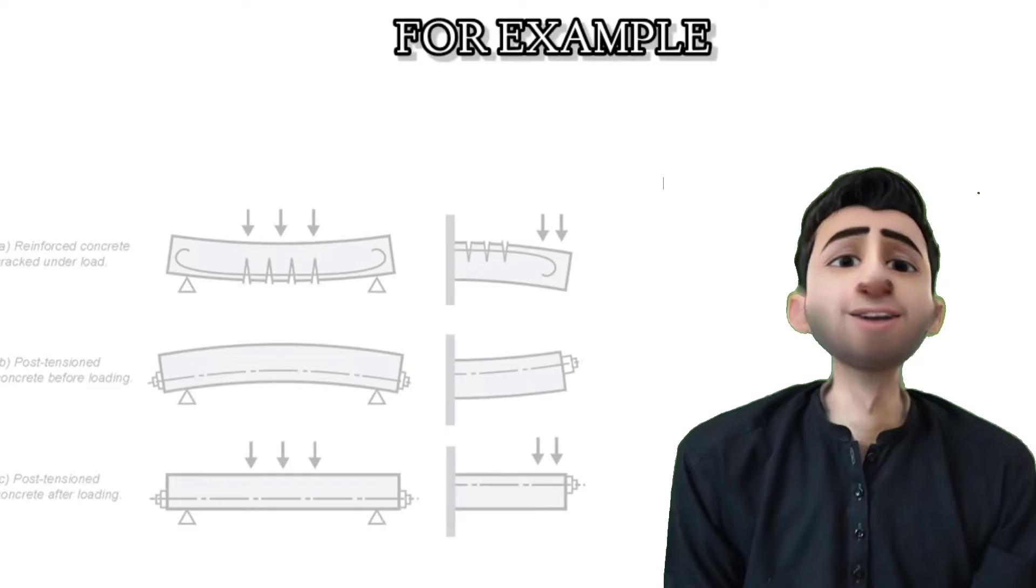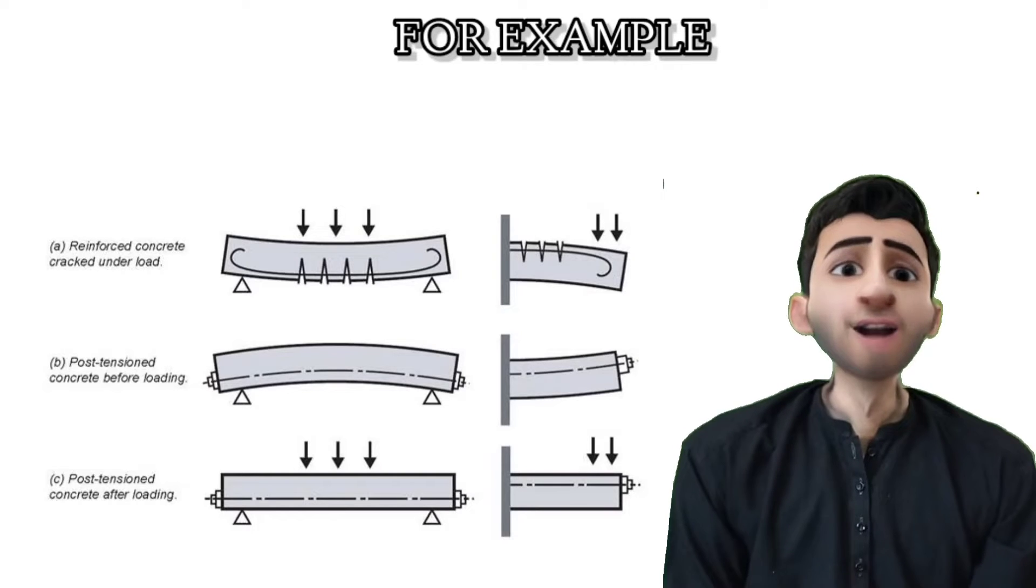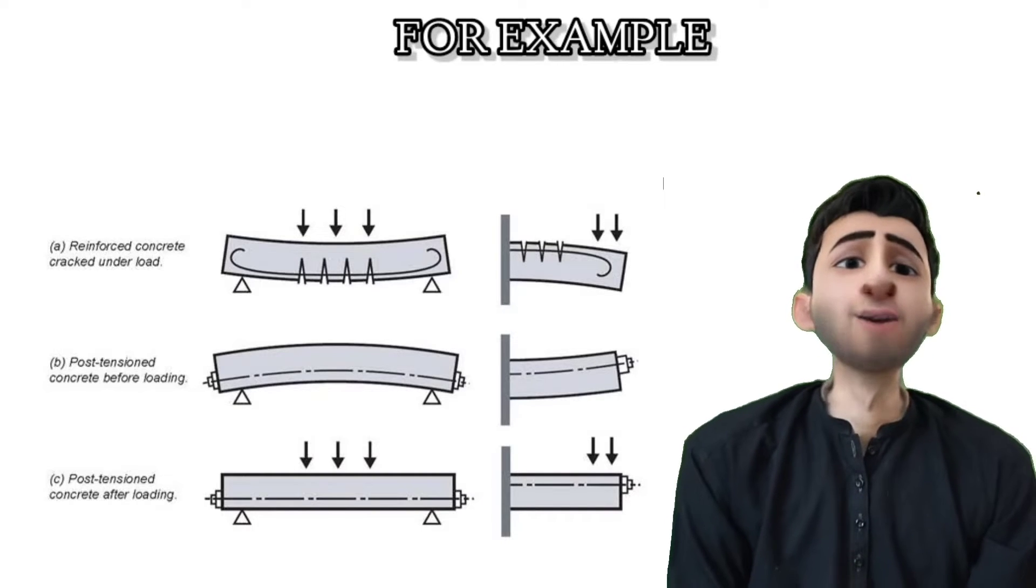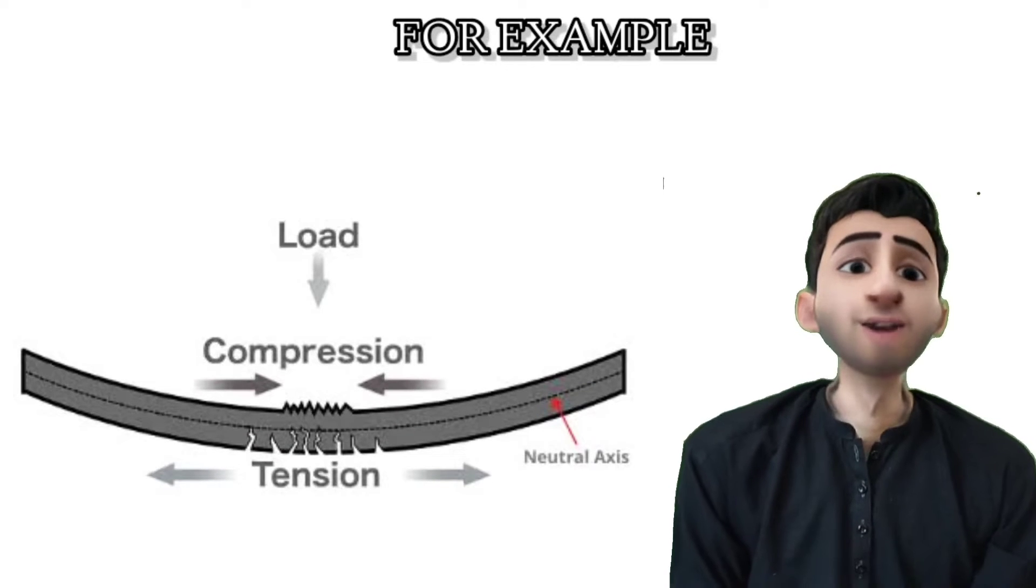For example, we have two or three columns with a roof on top. Whenever a load arrives on the beam or slab, it will deflect like this. The down portion will deflect like this and the upper portion will also change itself.